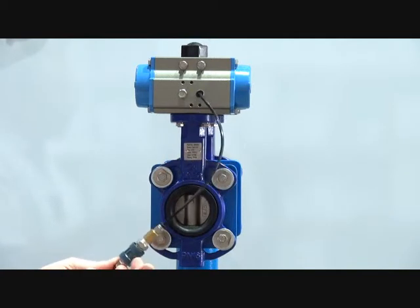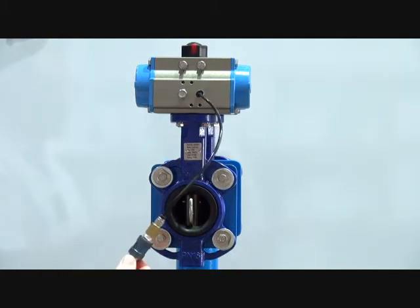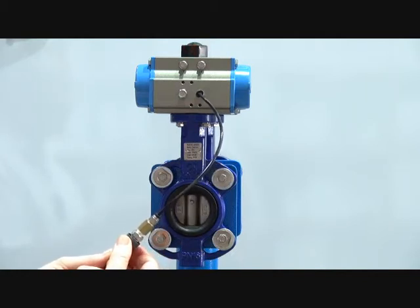I'll just use this 3.2 valve here to operate this unit. Put air in. The unit opens. When I release the air from that end, the spring closes the actuator.